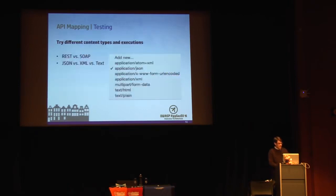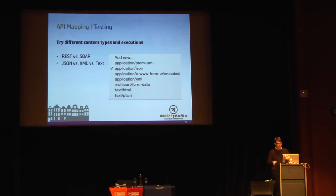Don't just try other methods, but also try other content types. If you're working with a REST-based API, don't assume it will only accept JSON — try sending XML or plain text and see what you get back. I've found that by changing the content type, I can sometimes get the application to feed back different information, which is quite surprising. You can send the same request formatted differently, and the API can respond in different ways, often disclosing additional information.